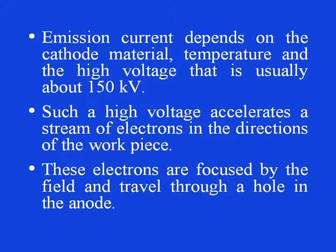In this setup, a tungsten filament cathode is heated to about 2500 to 3000 degree Celsius in order to emit electrons. The effect is measured by the emission current, which is of 20 to 100 milliampere in magnitude and its density is between 5 to 15 amperes per centimeter squared. Emission current depends on the electrode material temperature and high voltage, which is usually about 150 kilovolt. Such a high voltage accelerates a stream of electrons in the direction of the work piece. These electrons are focused by the field and travel through a hole in the anode.